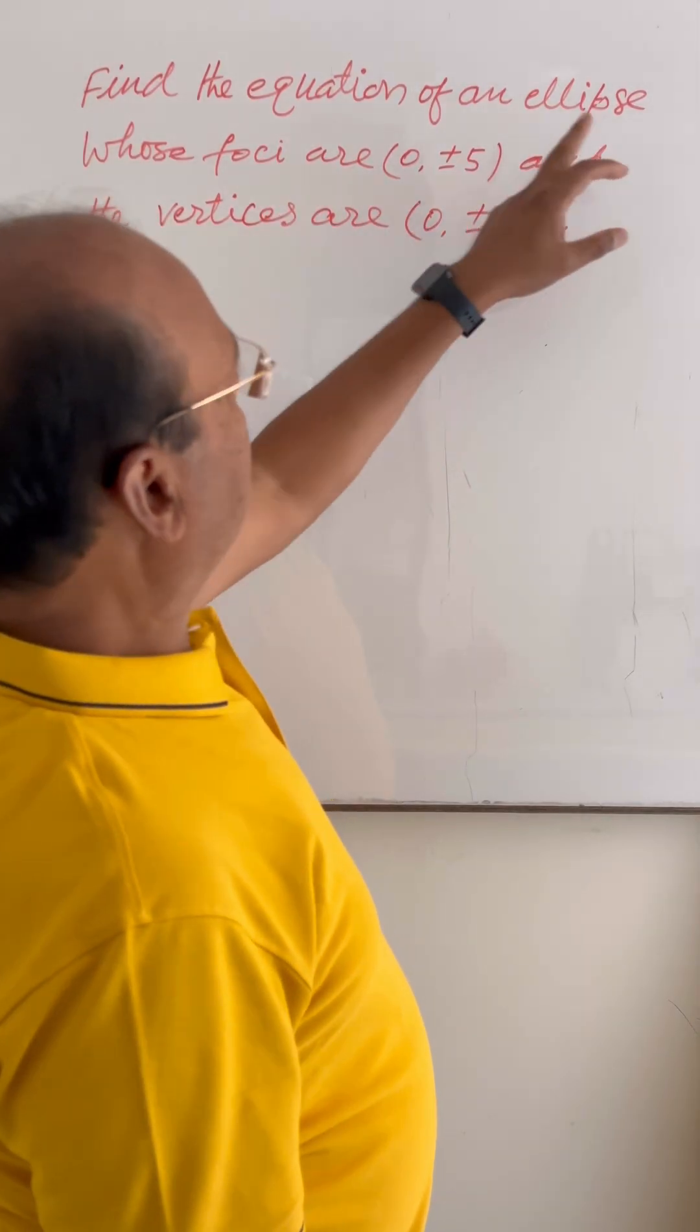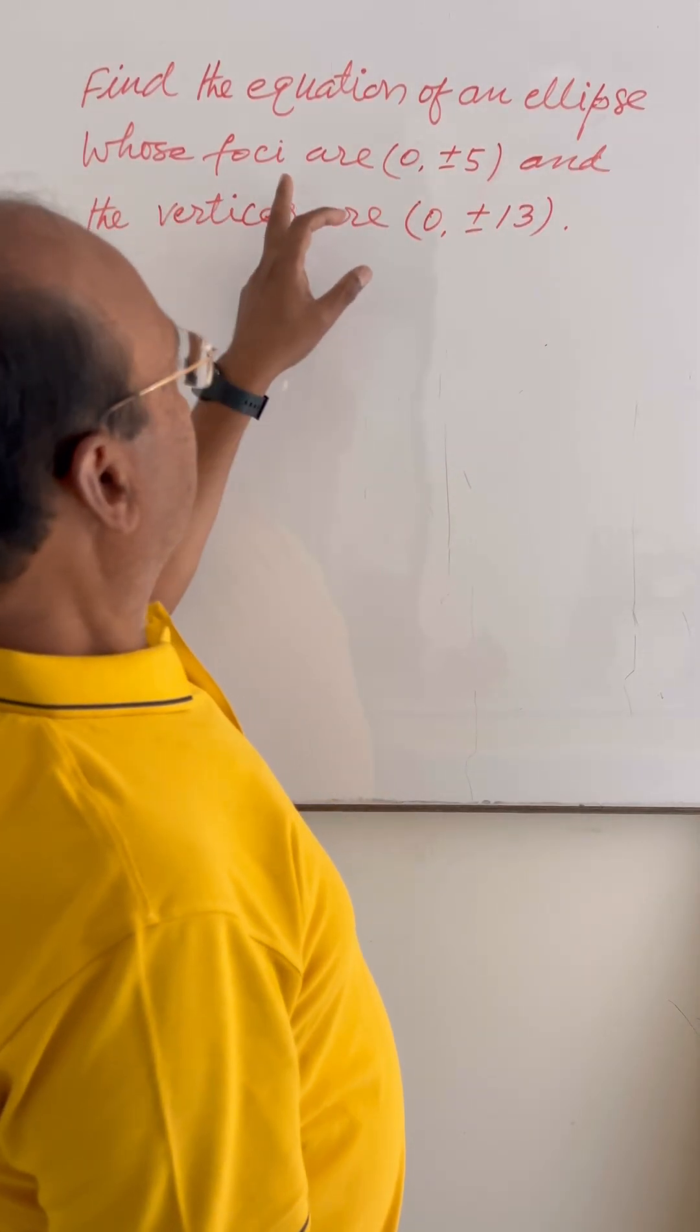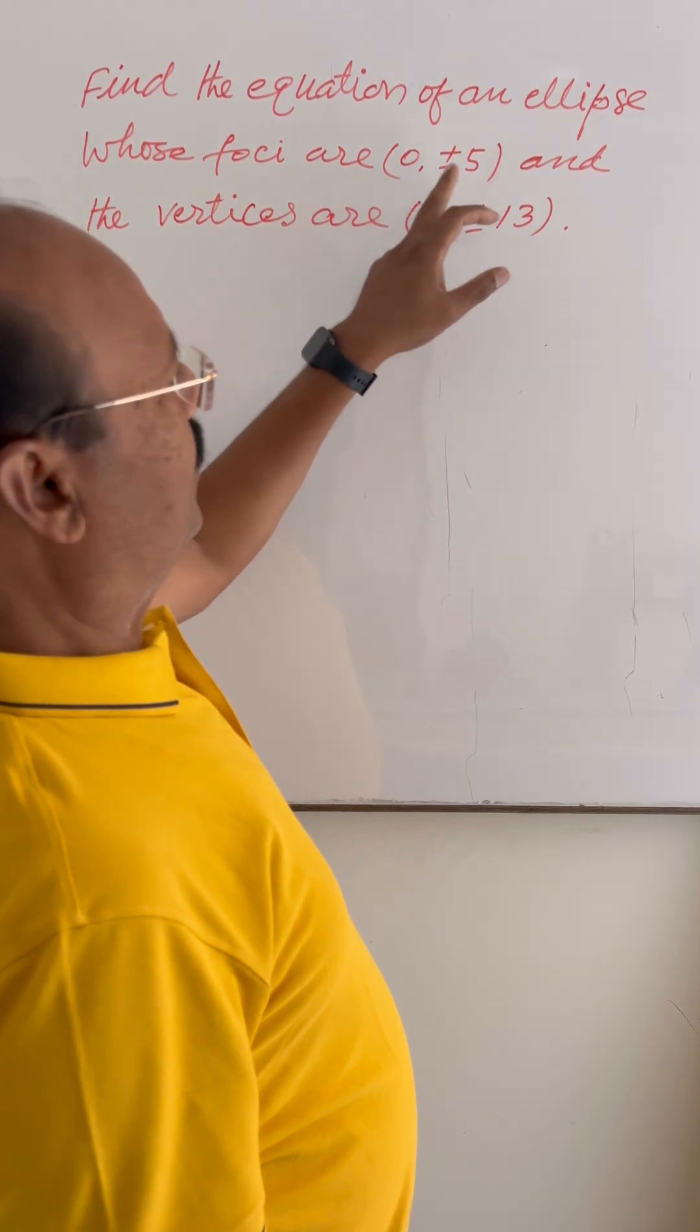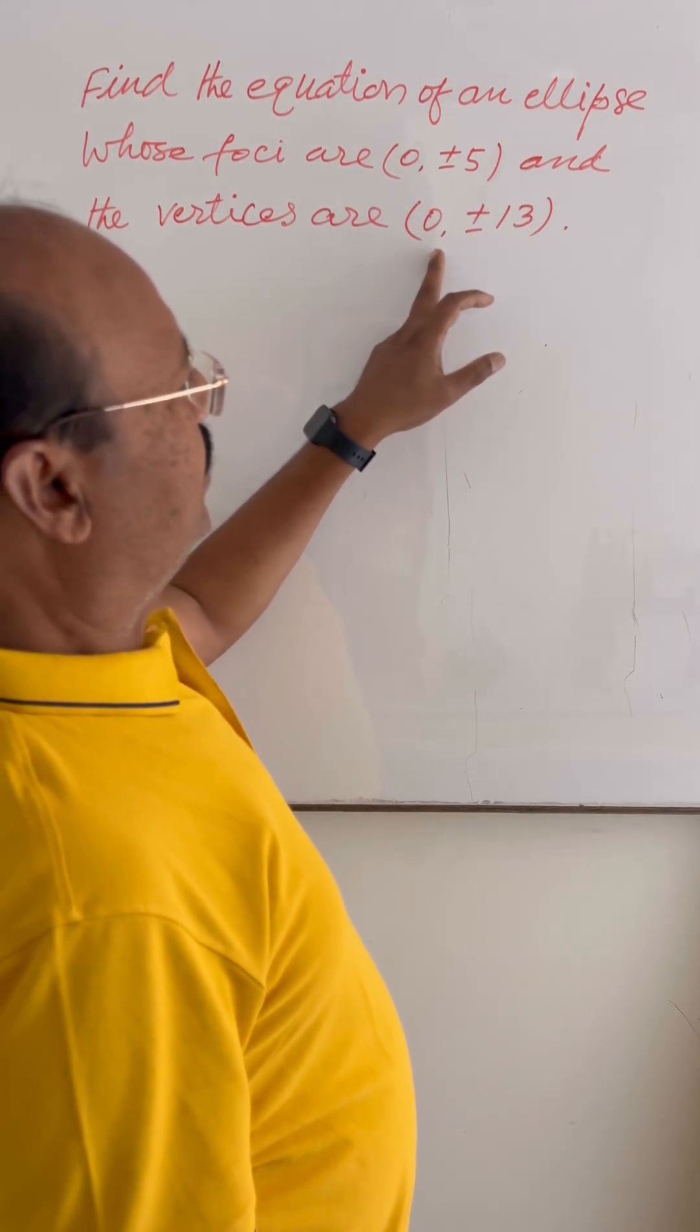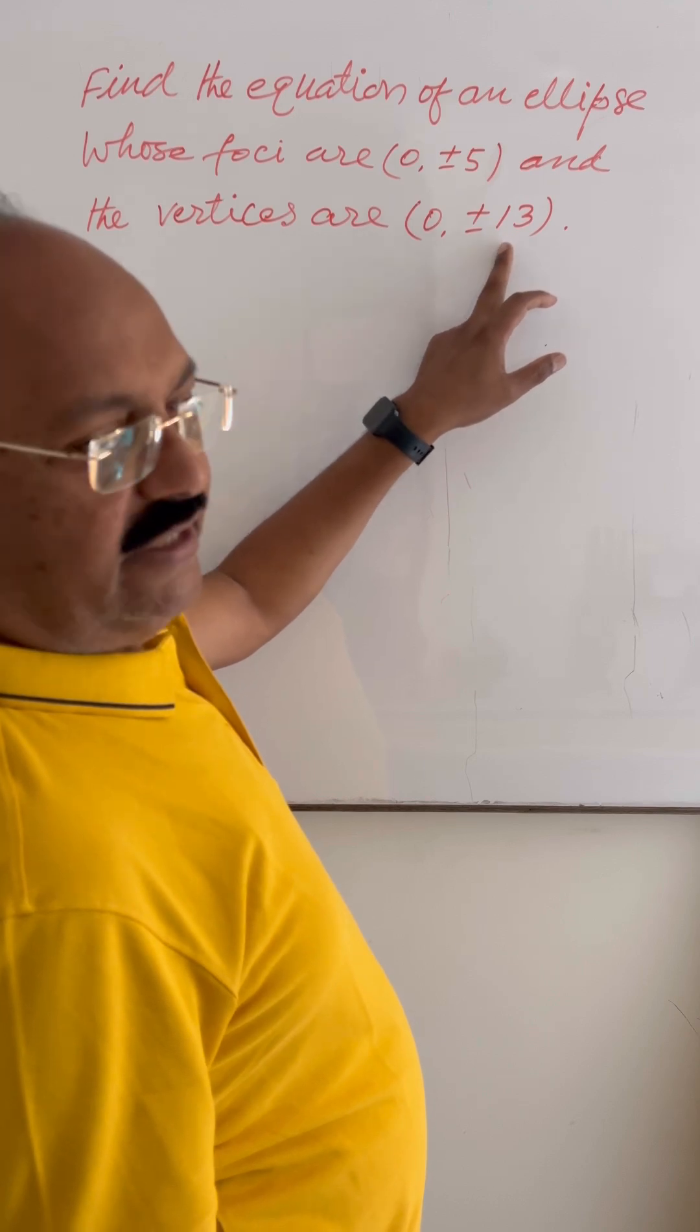Here the question is find the equation of an ellipse whose foci are (0, ±5) and the vertices are (0, ±13).